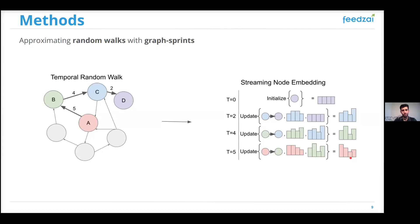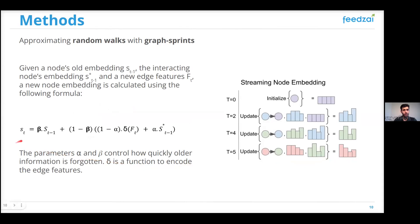So, formally speaking, in order to obtain an embedding for a certain node at timestamp T, we only need its previous state, we need the state of its direct neighbor, the neighbor with whom it shared the arriving edge, and also the features of this arriving edge. About alpha and beta, they are tunable parameters that control how quickly old information is forgotten, and delta is a function that encodes the edge features into a vector of the same length as the state or the embedding vector.